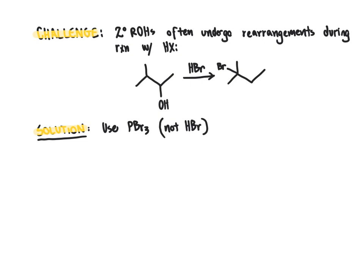To highlight the challenge with secondary alcohols: if we take a secondary alcohol and react with HBr in an SN1 mechanism, the carbocation that forms undergoes a hydride shift, moving the carbocation to an adjacent carbon. The bromide anion attacks at that carbon, giving a rearranged product. If instead we wanted the bromide at the original carbon, the way to accomplish that is to use phosphorus tribromide, PBr3, which converts primary and secondary alcohols into the corresponding alkyl halides without carbocation rearrangements.